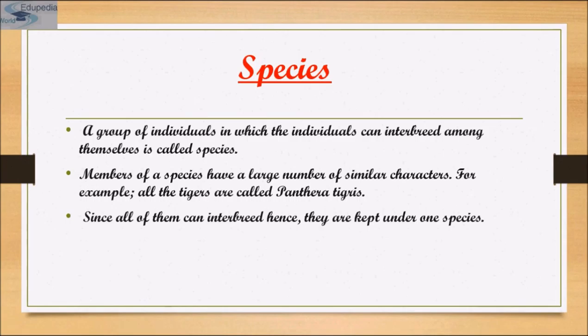Each genus may have one or more specific epithets representing different organisms with morphological similarities. For example, Panthera has another specific epithet tigris, and Solanum includes species like nigrum and melongena. Human beings belong to the species sapiens, grouped in the genus Homo, so the scientific name for human beings is written as Homo sapiens.